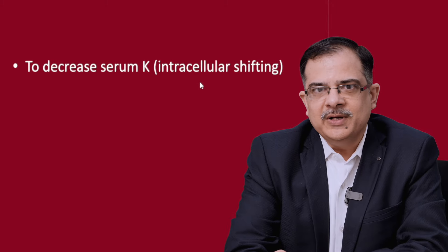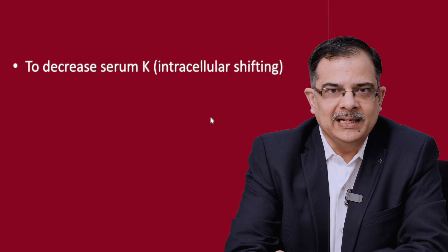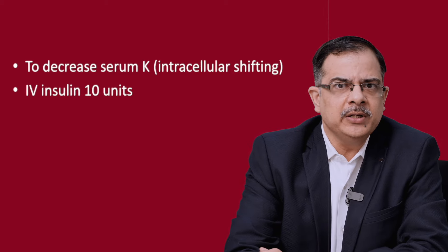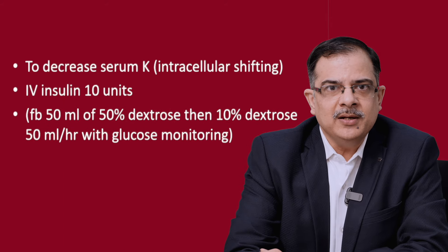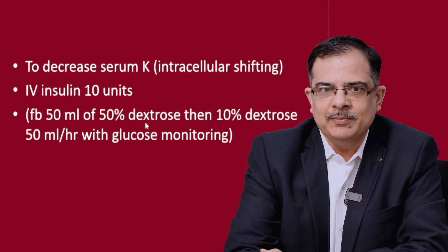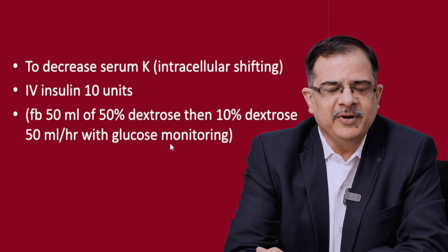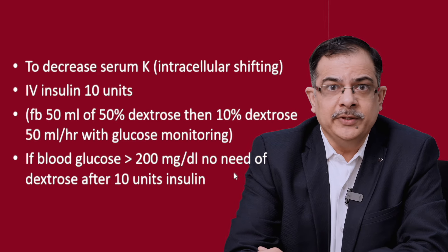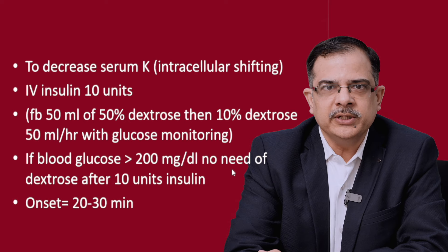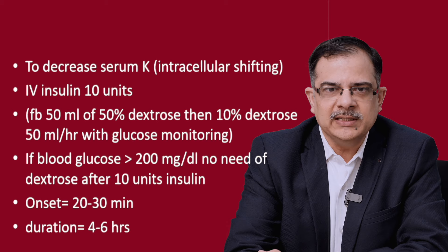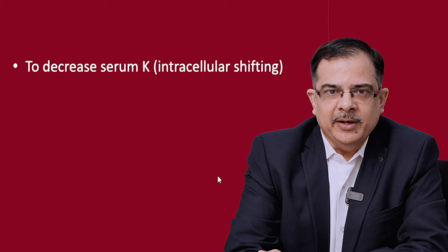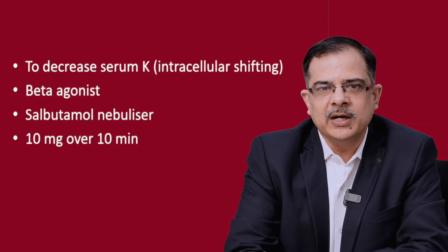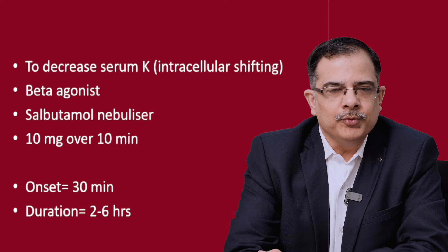To decrease serum potassium, we go for intracellular shifting of potassium from blood back into the cells. One important agent is insulin — we give IV regular insulin, 10 units. Because it can cause hypoglycemia, simultaneously we give 50 ml of 50% dextrose, then 10% dextrose at 50 ml per hour with glucose monitoring every 1 to 2 hours. If blood glucose is more than 200, there is no need to give dextrose after the 10 units of insulin, but glucose monitoring remains important. Onset of action is 20 to 30 minutes and duration is 4 to 6 hours. We can also give a beta agonist — salbutamol nebulizer at 10 mg over 10 minutes. Onset of action is 30 minutes and duration is 2 to 6 hours.